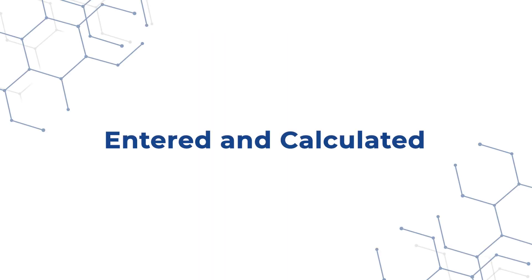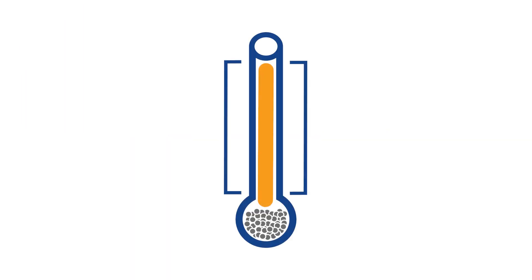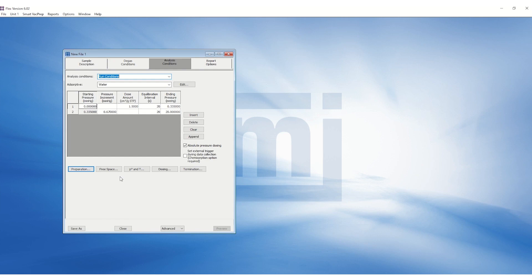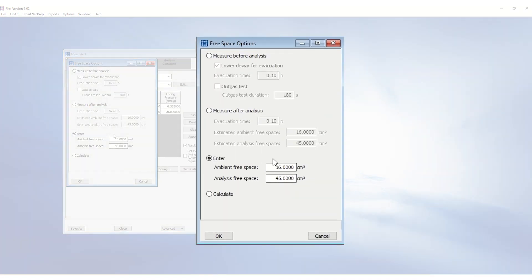Entering and calculating free space can help the helium entrapment issue. Entering the free space skips the free space measurement so the sample is exposed to the adsorptive gas before being exposed to helium. The enter free space values should be close to the measure values since this information is used for determining the dose amount.